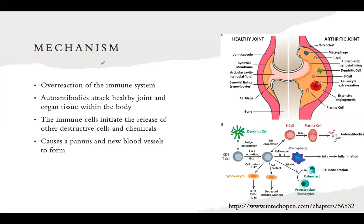The mechanism involves an overreaction of the immune system, where autoantibodies attack healthy joint and organ tissues. Normal antibodies attack foreign viruses or bacteria, but autoantibodies attack your own tissue. In rheumatoid arthritis, they specifically attack the synovial joint, and immune cells initiate a release of other destructive cells and chemicals. Immune response cells — leukocytes, T cells — initiate a cascade effect: T cells activate macrophages, leading to inflammation and bone erosion.